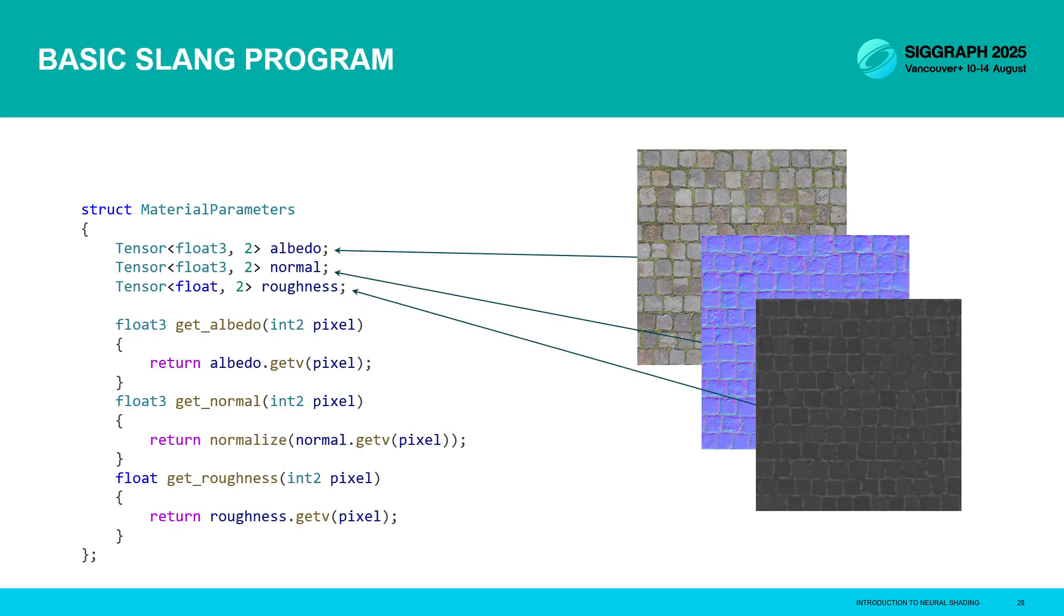So onto some programming. We're starting out with slang code here. We're going to create a material parameter structure which has an albedo map, a normal map and a roughness map. So here we're storing them as tensors or 2D buffers, but really this is no different to textures. They're just 2D grids of numbers. And alongside these parameters, we're going to provide a set of accessors: a function to get the albedo at a given point, another to get the normal at a given point, and one more function to get the roughness at a given point.